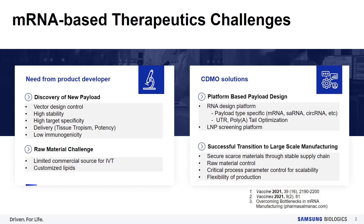From the perspective of process development, CDMO companies may advise developers on an RNA design platform suited to a specific payload type such as mRNA, siRNA, circular RNA, and other components like UTR and poly-A tail region. An LNP screening platform will be very helpful for those seeking an optimal delivery vehicle while bypassing IP-related issues. A role for successful transition to large-scale manufacturing by a CDMO company is absolutely crucial. They should be able to secure scarce materials through a stable supply chain, manage raw material control, establish critical process parameters for scalability, and be flexible in production.